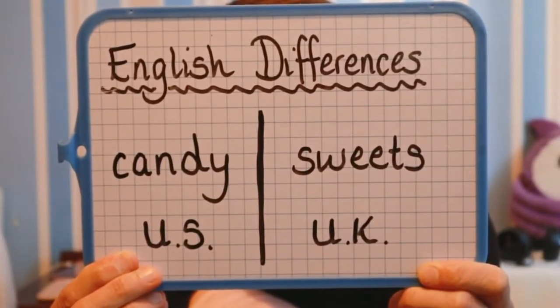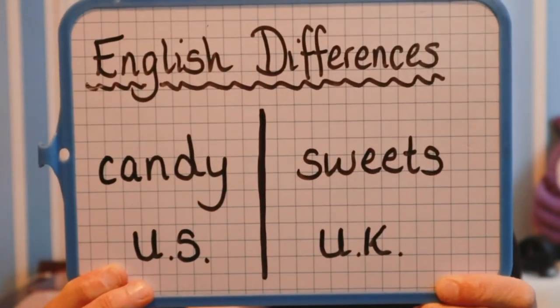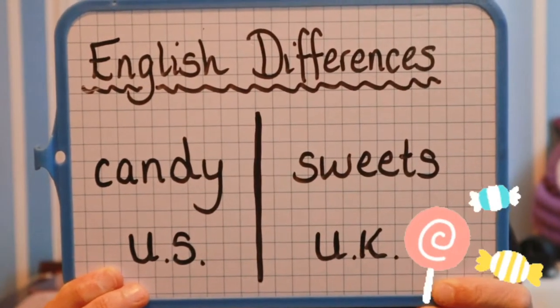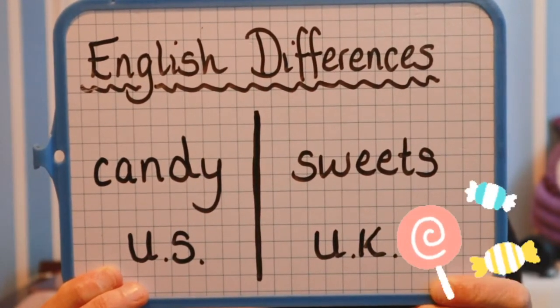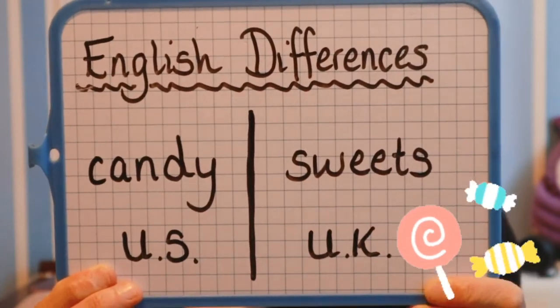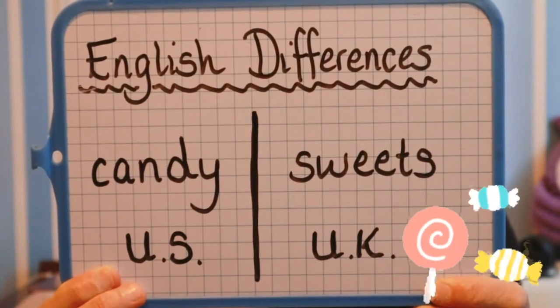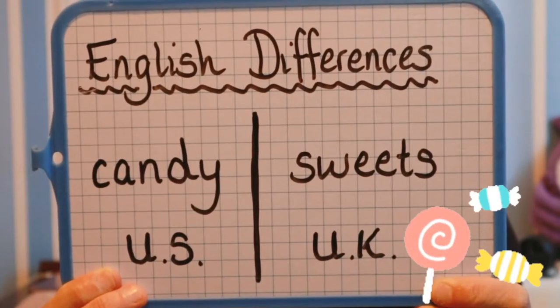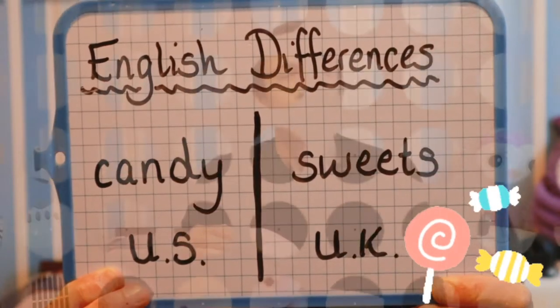Now let's take a look at the second difference. In the US they would call this candy, but in the UK we call them sweets.